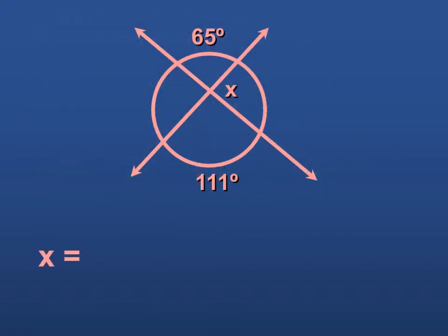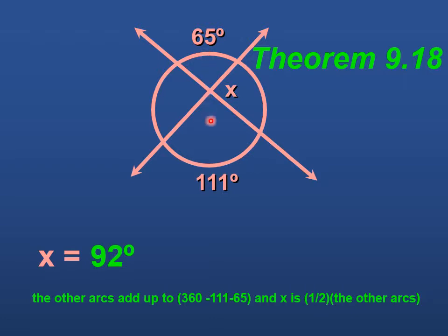To find the measure of angle X, we do know that sum has to be 360 minus 65 minus 111. So these other arcs are going to add up to whatever 360 minus 111 minus 65 is. And so X would be half of that. So X is half of the sum of the other arcs, which was 360 minus 111 minus 65, giving us the answer of 92.